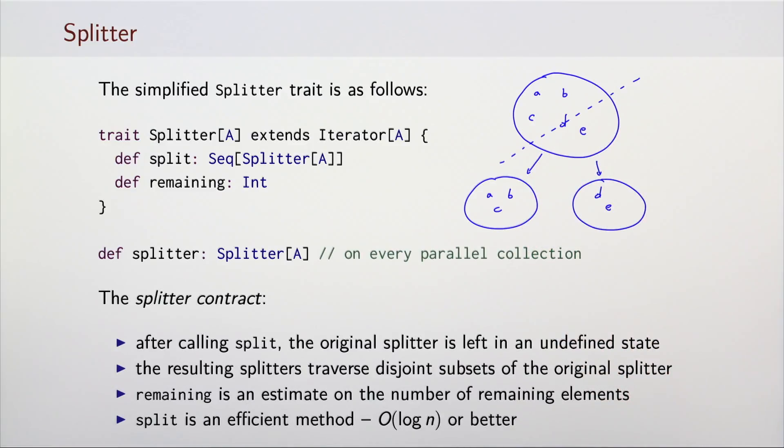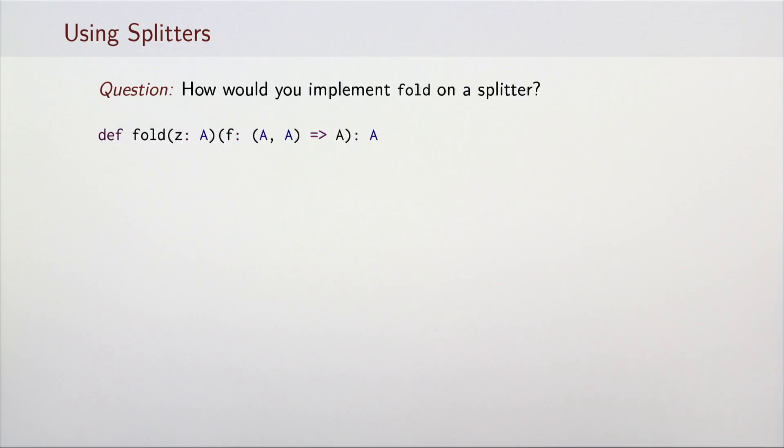Normally, the split method should return at least two splitters. Importantly, the split method must execute in logarithmic time or better. The idea is that split must be invoked multiple times during the execution of a parallel operation, so it must be efficient. Now, take some time and think about how you could use splitter to implement the method fold that we talked about in the previous lecture.